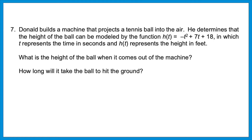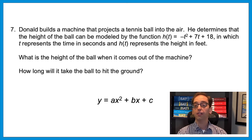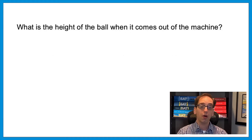All of the questions so far have dealt with linear situations, but a modeling question can also apply to something other than the equation of a line. Donald builds a machine that projects a tennis ball into the air. The height is modeled by h(t) equals negative t squared plus 7t plus 18, where t is time in seconds and h(t) is height in feet. A ball thrown in the air follows a parabola. This equation is in standard form y equals ax squared plus bx plus c — in that form the c term is the starting height or y-intercept. So this ball starts 18 feet in the air.